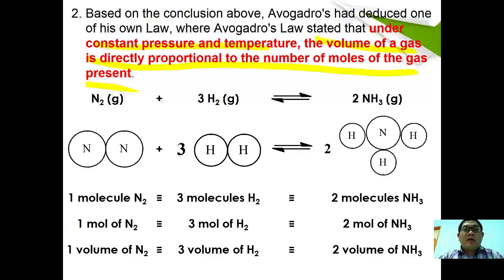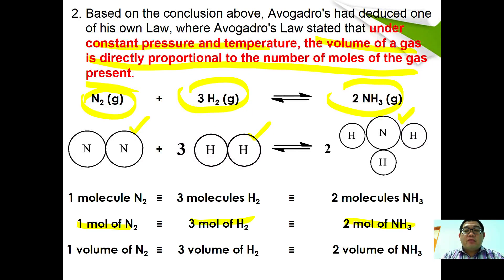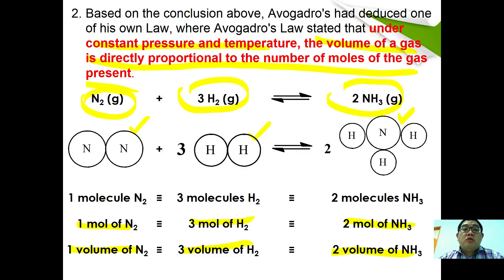To illustrate Avogadro's law, consider the synthesis of ammonia: one mole of nitrogen reacts with three moles of hydrogen to form two moles of ammonia. In terms of molecules, one nitrogen molecule reacts with three hydrogen molecules to give two ammonia molecules. Because they are gases, moles can be directly related to volume — so one volume of N₂ reacts with three volumes of H₂ to produce two volumes of ammonia.